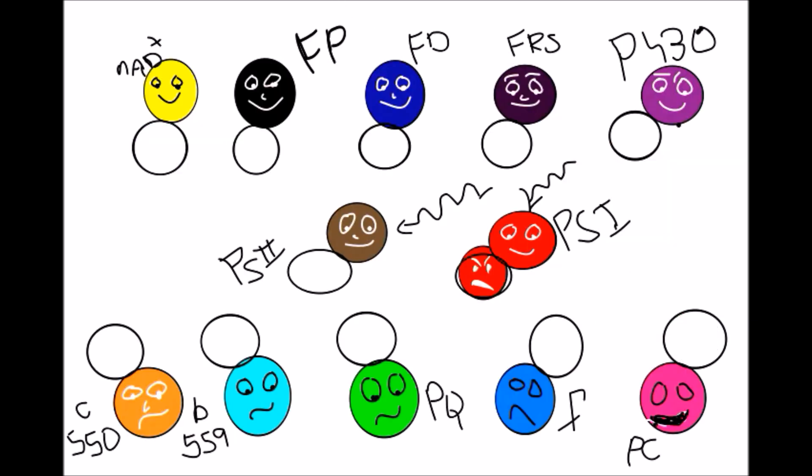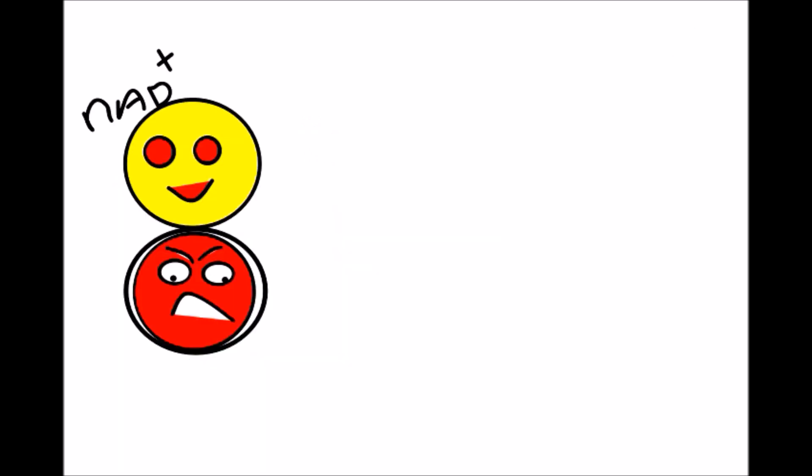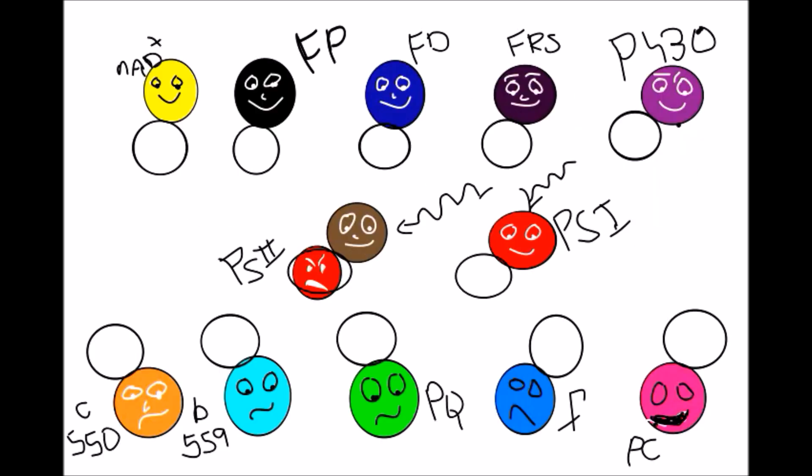When PS1 is illuminated by sunlight, it will enter into P430, FRS, FD, FP, and NAD+. These are a chain of electron acceptors. Finally, the electron reaches NAD+. This NAD+ is reduced to NADH.